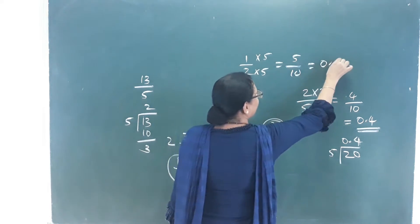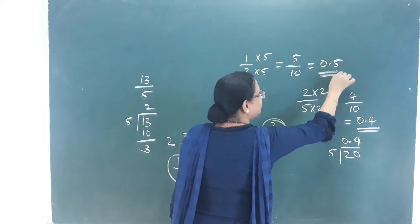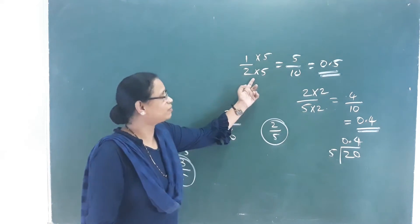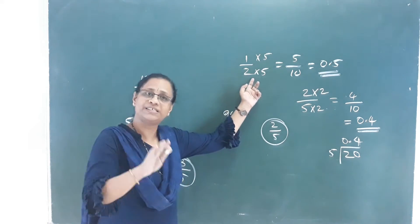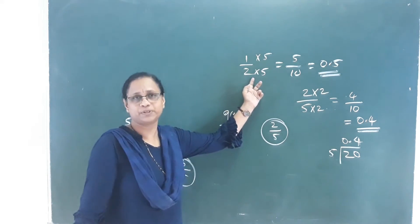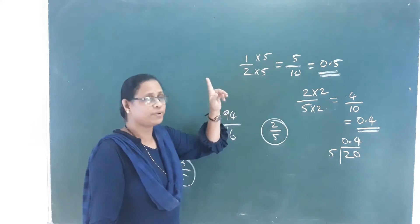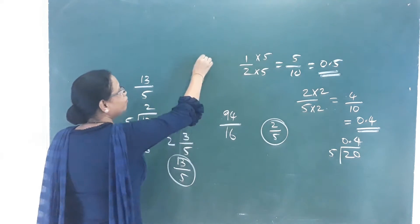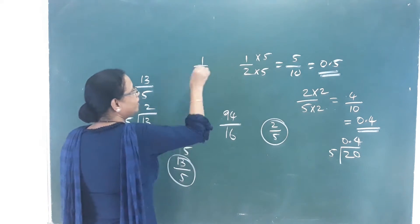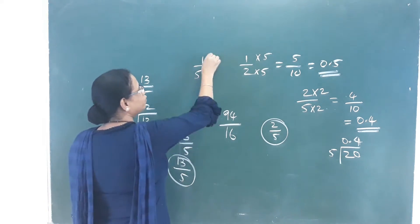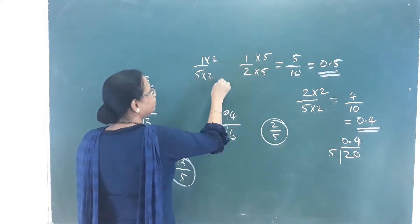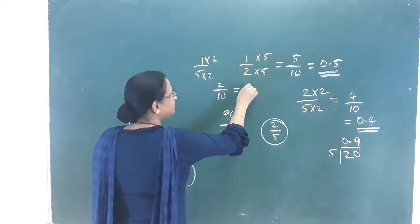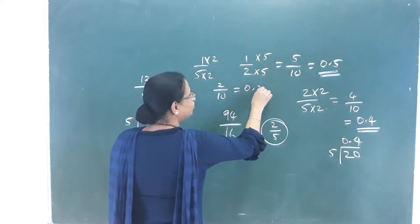That gives 0.5. We terminate here — stop it. This decimal form is easy to convert. Now the denominator is 5: multiply by 2, giving 2 by 10, which means 0.2.